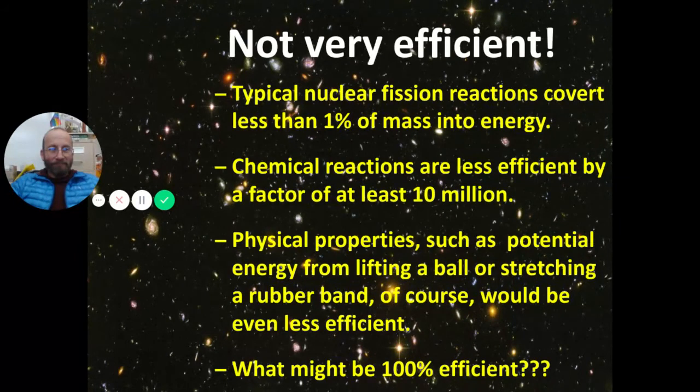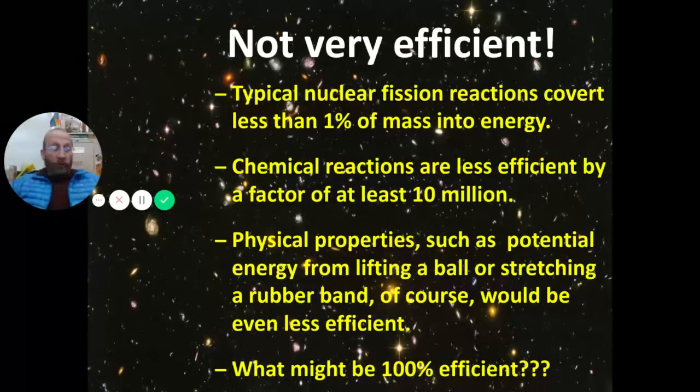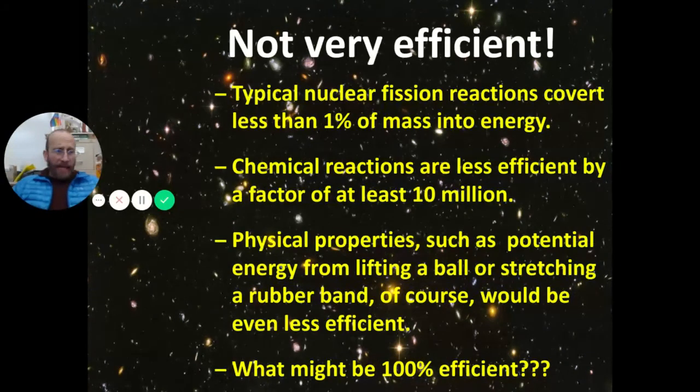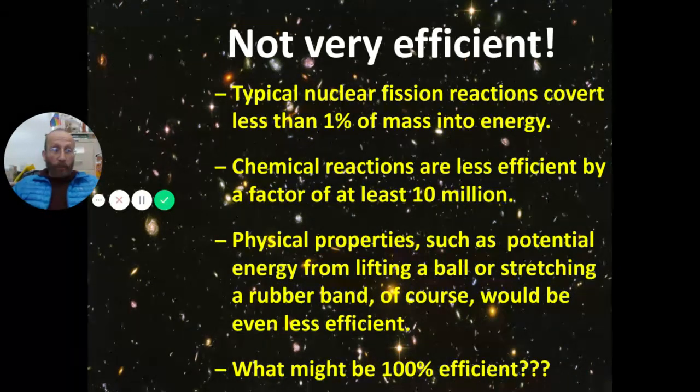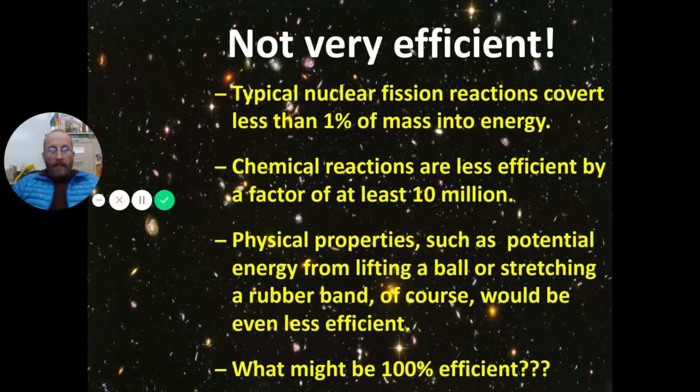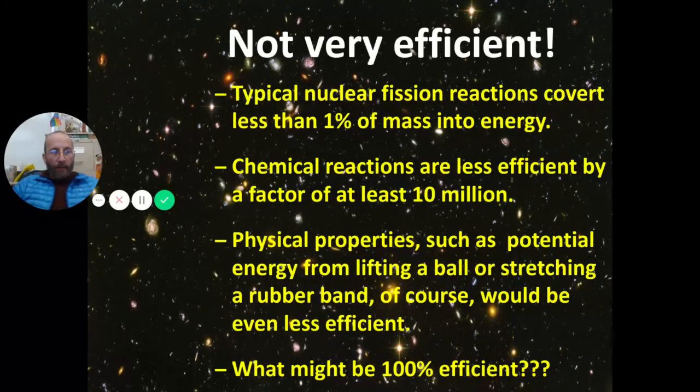Okay, so nuclear reaction, nuclear fission like we have in a nuclear power plant only converts about 1% of its mass into energy. So out of those thousands of coal trains, coal cars that would be delivered in a year to that power plant, only 1% of that mass would just get annihilated and cease to exist in our universe and be converted into energy. Chemical reactions are even less efficient by 10 million times. The physical properties, for example, the potential energy in this tennis ball and the increase in that when I raise it a little bit, are minuscule in comparison to chemical reactions.